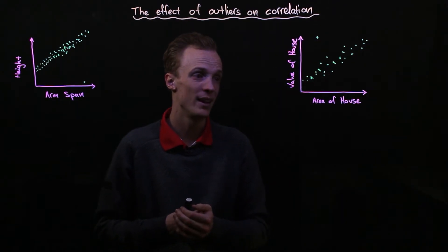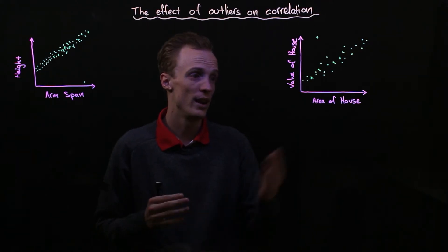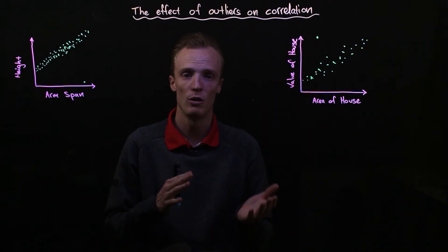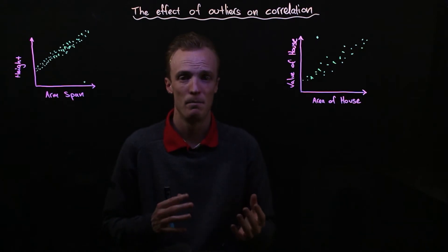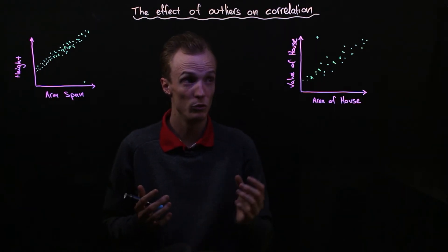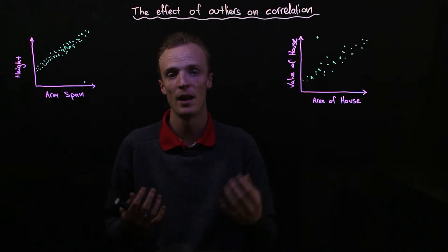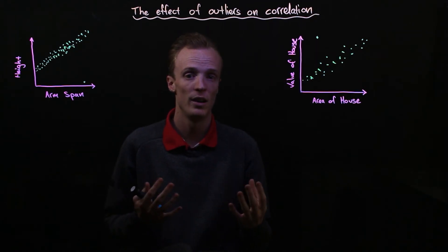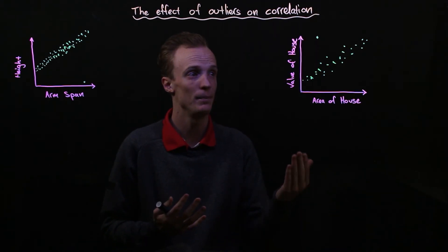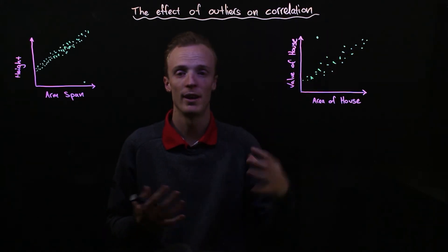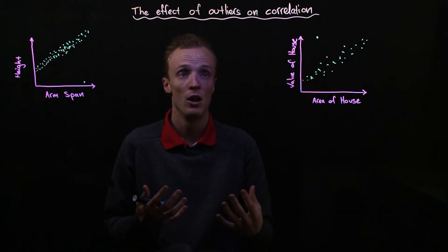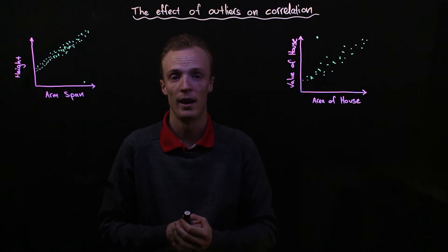And that might be you're looking at whether there's a correlation between area of house and value of house in non-prime locations. But to genuinely do that you would really need to know that this house was in a prime location. Otherwise you would still have to keep that point inside of our data here when we're starting to look at any correlation between our variables.